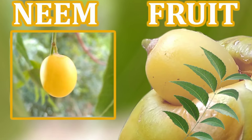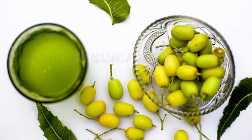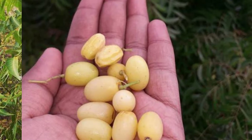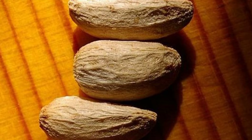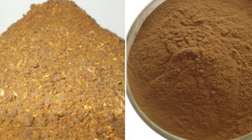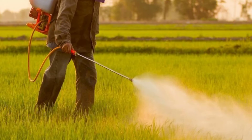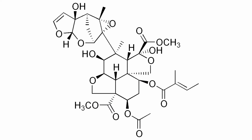Neem fruit is of three types: oblong, oval, and globular. The fruit is a smooth, ellipsoidal drupe, up to almost 2 cm long. The seed is composed of a shell and a kernel. The kernel is the part used most in pest control.